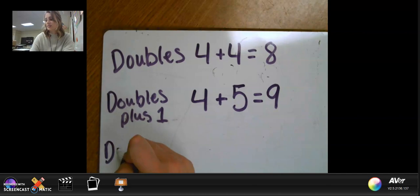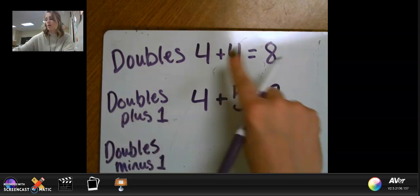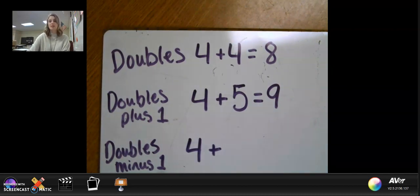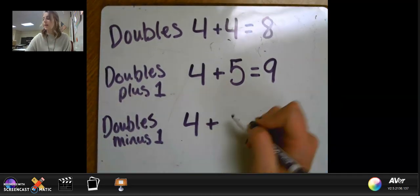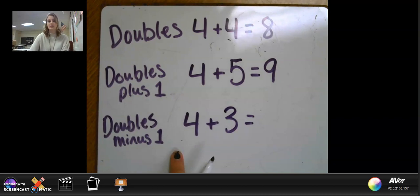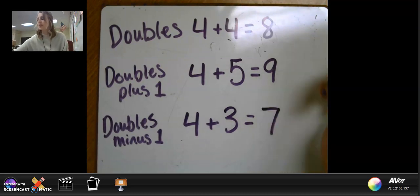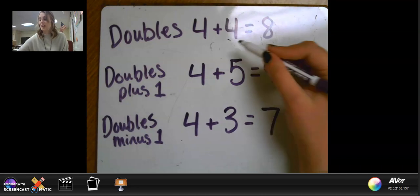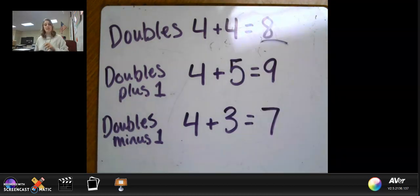For doubles minus one, it's very similar. We're looking at our original problem again: four plus four. But this time I want to do minus one from our doubles — minus one from our second number. So four minus one is three. I know my doubles minus one looks like four plus three equals seven. If we're looking at our original and we're doing doubles minus one, I minus one in my second addend, and I minus one from my answer, my sum. So we get four plus three equals seven. We worked on this with our unifix cubes yesterday as well.